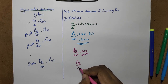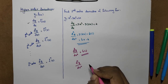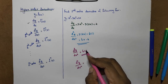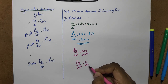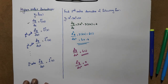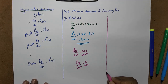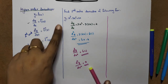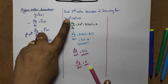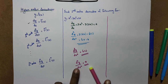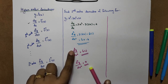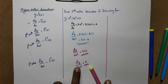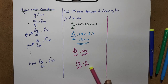d⁴y/dx⁴: the derivative of a constant is 0. If y is equal to a polynomial in x³, the d⁴y/dx⁴ is 0. If you have a polynomial of higher degree, when you differentiate enough times it will become 0.